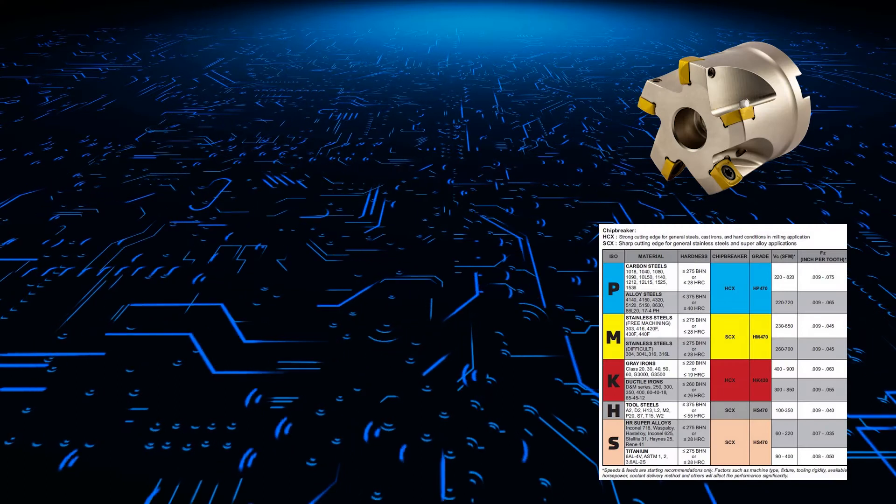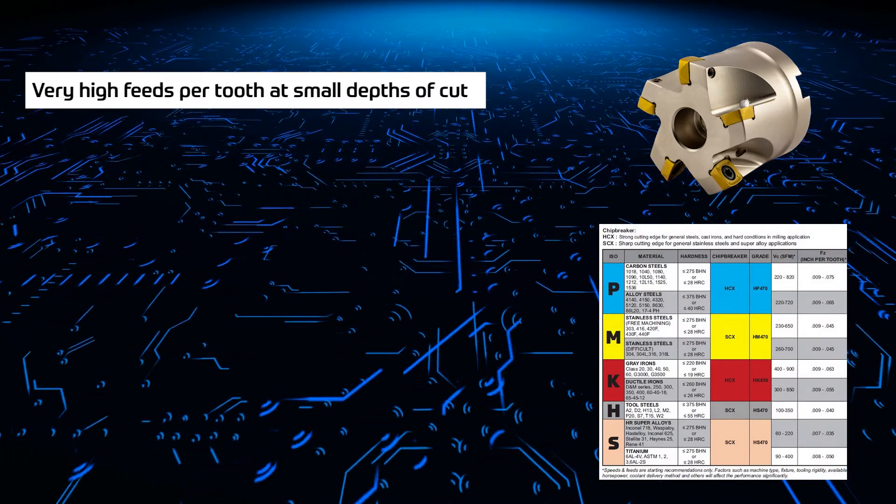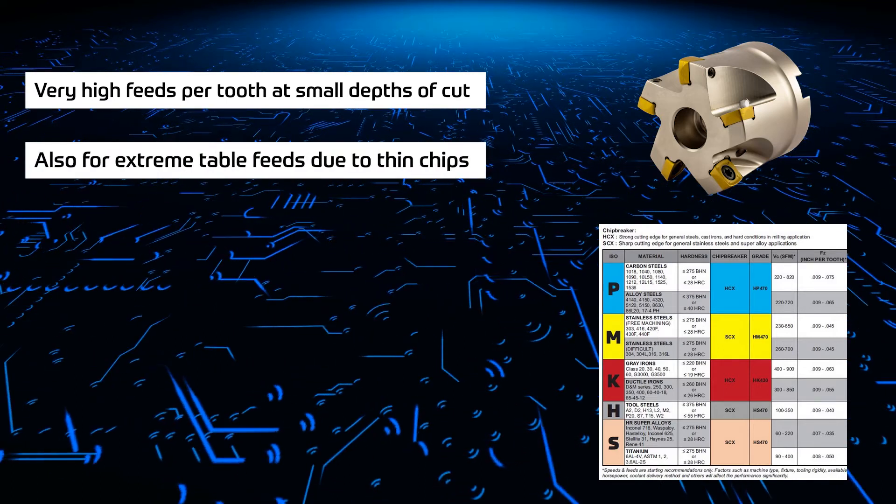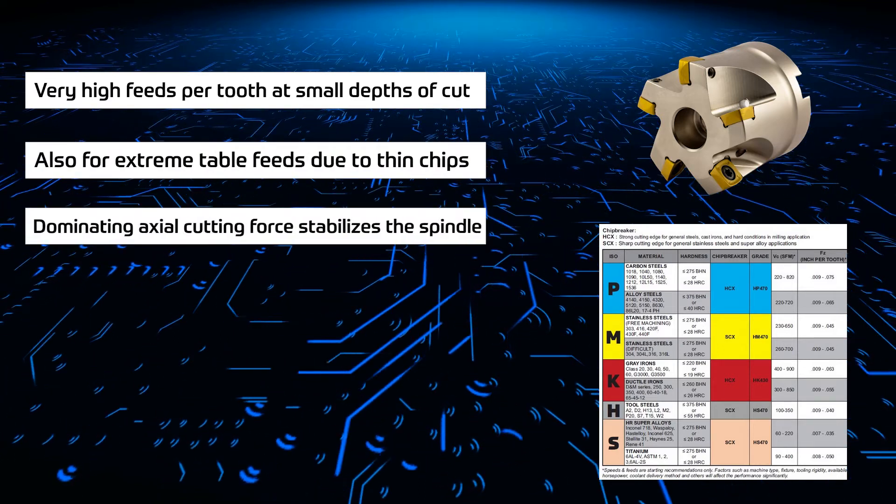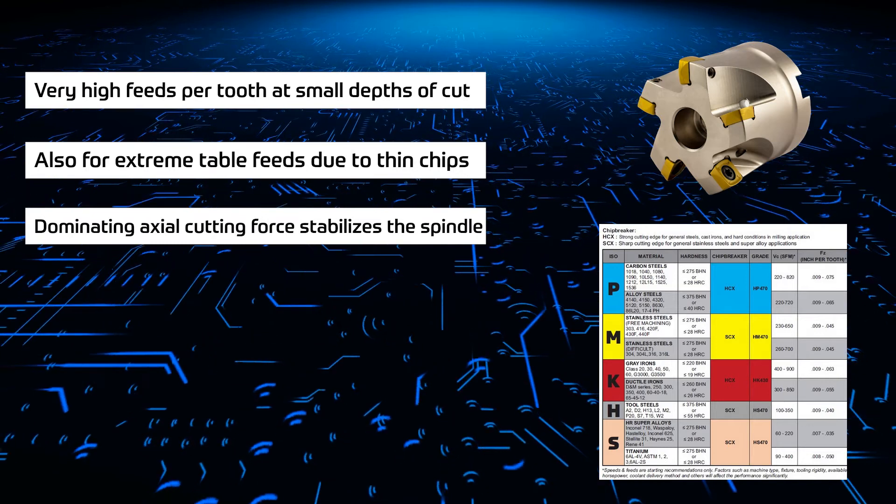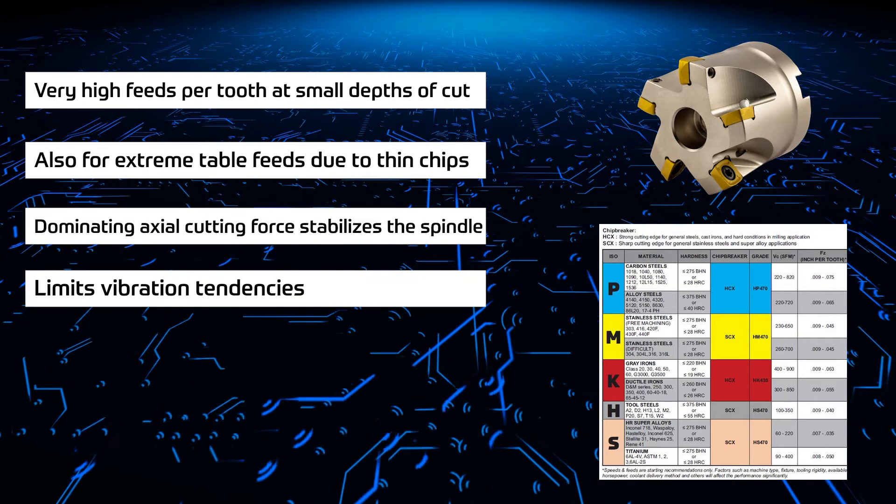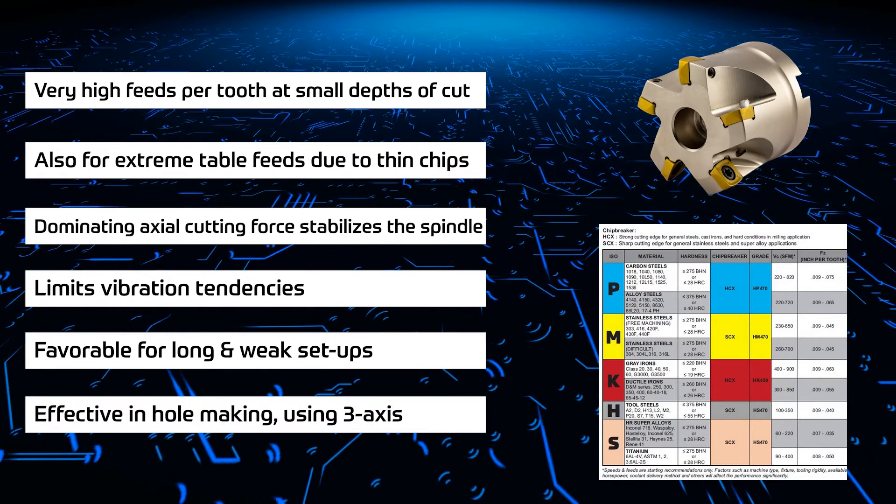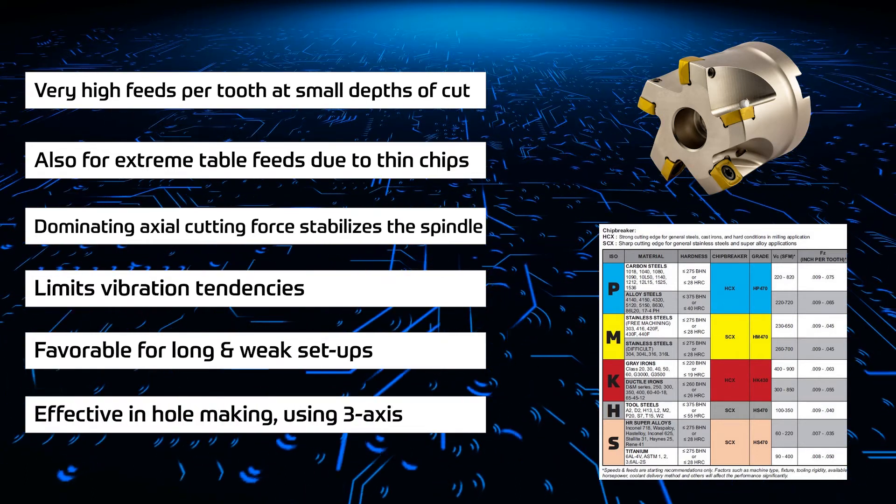High feed and plunge milling applications. Very high feeds per tooth at small depths of cut and for extreme table feeds due to thin chips. Dominating axial cutting force stabilizes the spindle. Limits vibration tendencies. Favorable for long and weak setups. Effective in hole making using three axes helical interpolation.